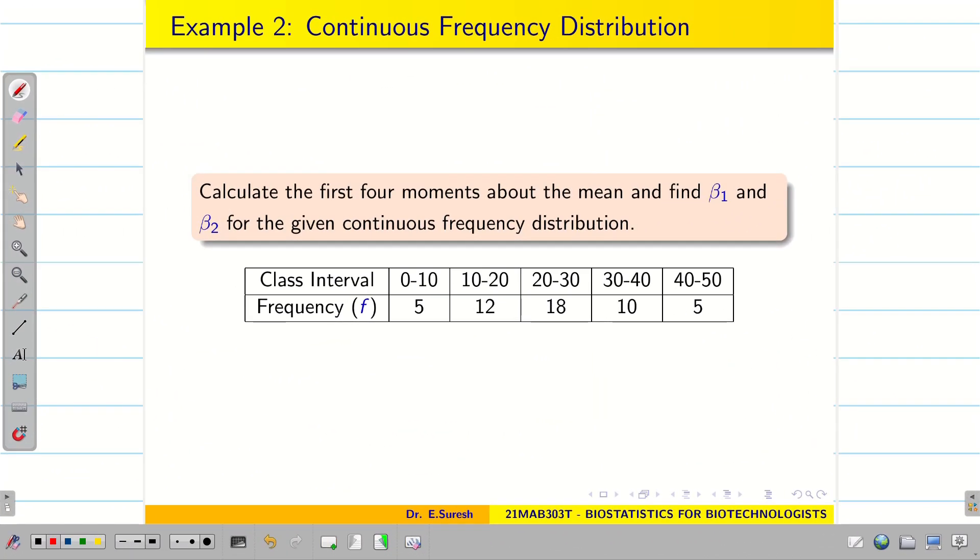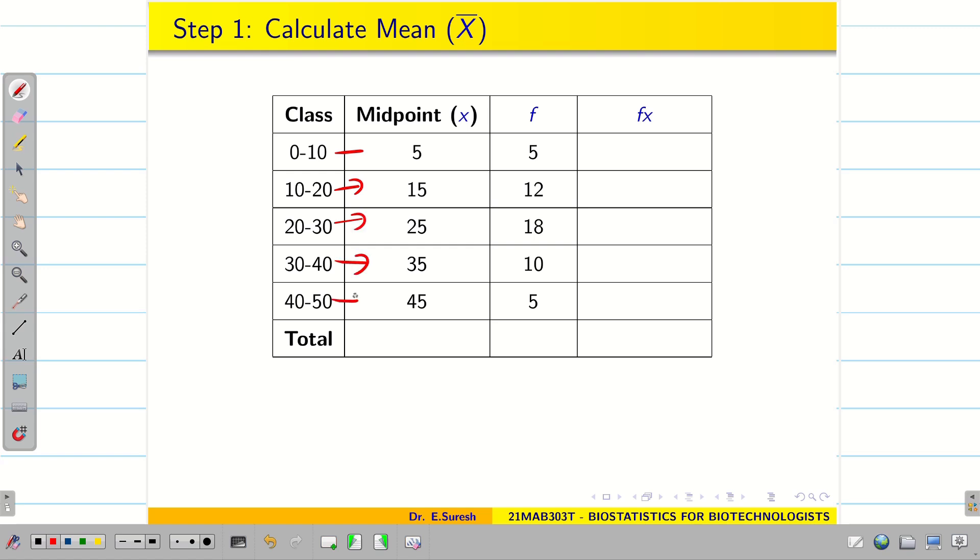Next we see one more problem on continuous frequencies. So only difference is instead of x, intervals will be given to you. From the interval we have to find the midpoint. So 50 plus 40 divided by 2, we will be getting 45. The remaining steps are same. So first find the midpoint and take it as x and write the frequencies. Now take your calculator and find the value of fx. Once it is done then press ac and then find the total.